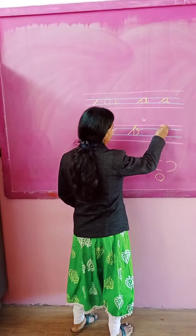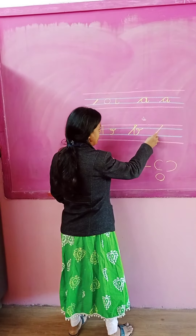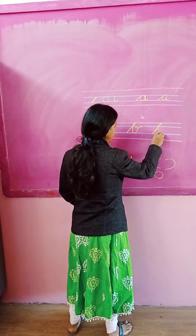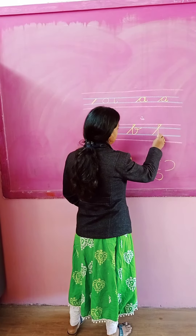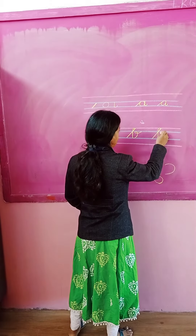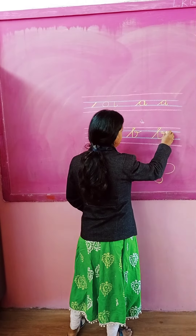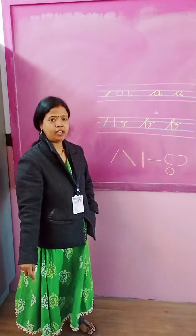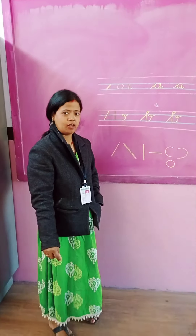Again, I will explain it: slanting line, straight line, curve, and come here — B. In this way, write B.